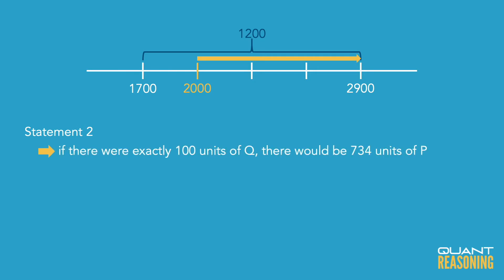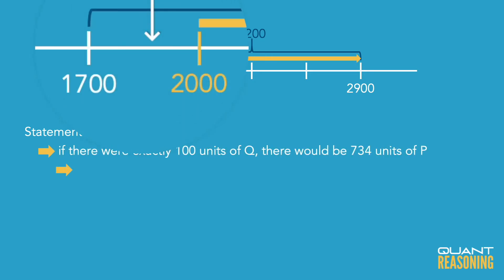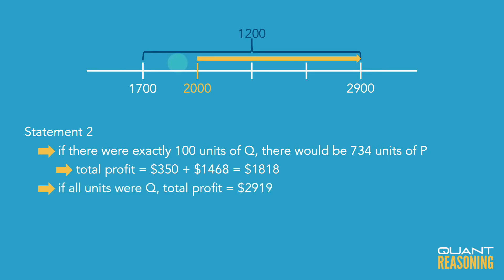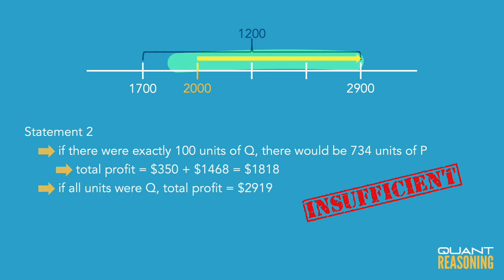Statement two tells us that there were at least 100 units of Q. If there were exactly 100 units of Q, that would put me a lot closer to the P side — 734 units of P and only 100 of Q — which would definitely put me in the bottom quarter. But statement two says at least 100 units of Q, so it's possible that all of the units sold were Q, giving us a definitive yes. Statement two also allows us to be in the bottom quarter or the top three quarters, so we eliminate answer choice B.